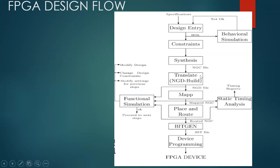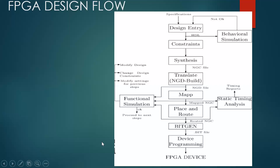Next comes translate, map, and place and route. These three are combinedly called implementation. In the translate step, we take the synthesized circuit and combine it with all the constraints to create a file. In the map process, since FPGA is made up of configurable logical blocks, IOs, switch matrices and all, we map our circuit to that logic.